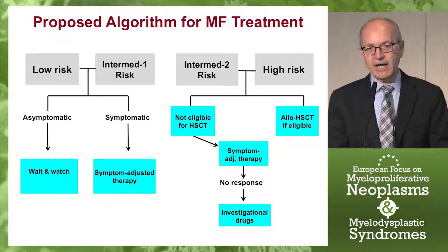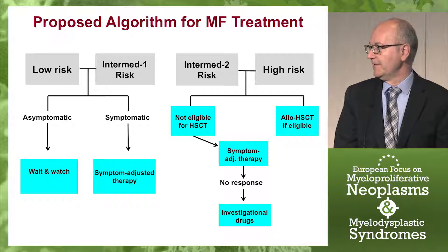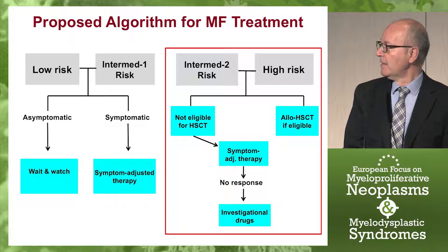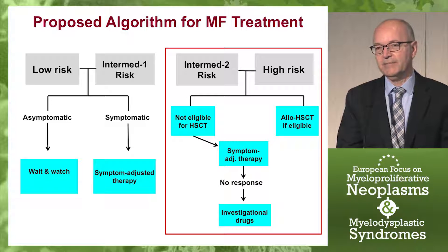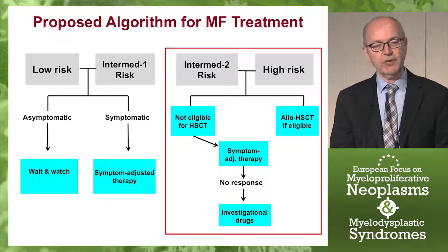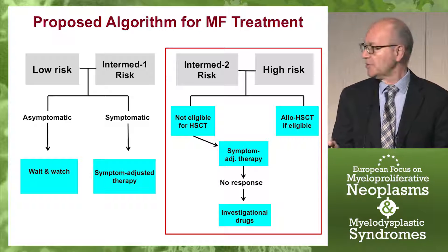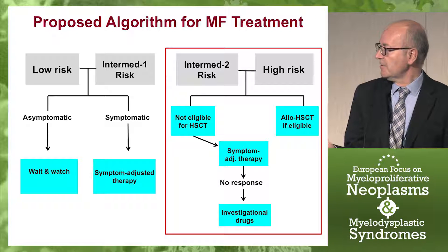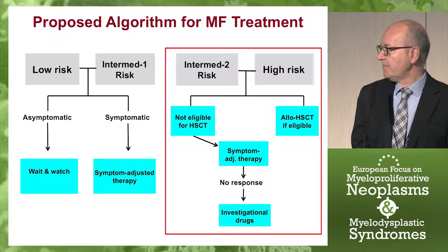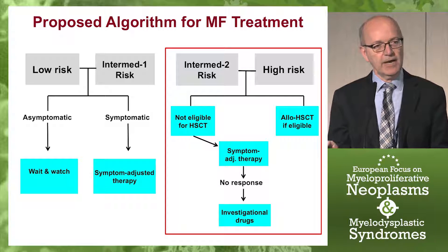This would be my proposed algorithm for the treatment of patients with myelofibrosis based on the risk of the disease. For patients with intermediate to high risk, the recommendation if they are eligible for transplantation is allogeneic transplantation. But the majority of patients are not eligible because they are older or not in very good condition. If transplantation is not possible, then symptom-adjusted therapy, and when there is no response, they are eligible for investigational drugs.